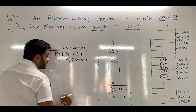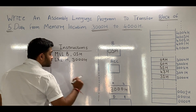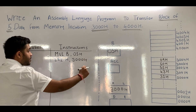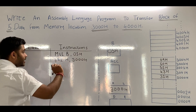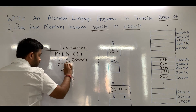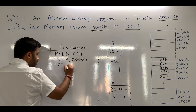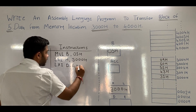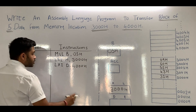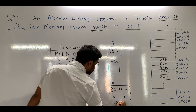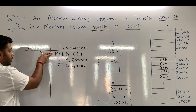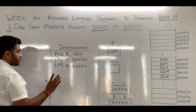We have to initialize the DE pair. DE is considered the destination memory pointer — so what is the destination? It is 4000H. So we will initialize DE with the instruction LXI D, 4000H. When we use this instruction LXI D, 4000H, the value 4000H will be stored in the DE pair. So we have initialized all the registers that are necessary — this portion is only for initialization.